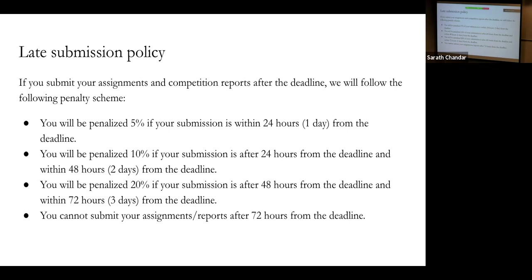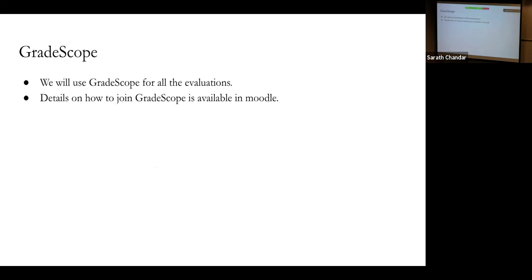We cannot entertain individual requests about deadline extensions. We will be using Gradescope for all evaluations. If you go to Moodle, you should see a link on the procedure for joining Gradescope. When you join Gradescope for the course, make sure you give your matricule — if you don't give your matricule, we have no way to link your marks to the grades. So please give your matricule when it asks for an identification number.